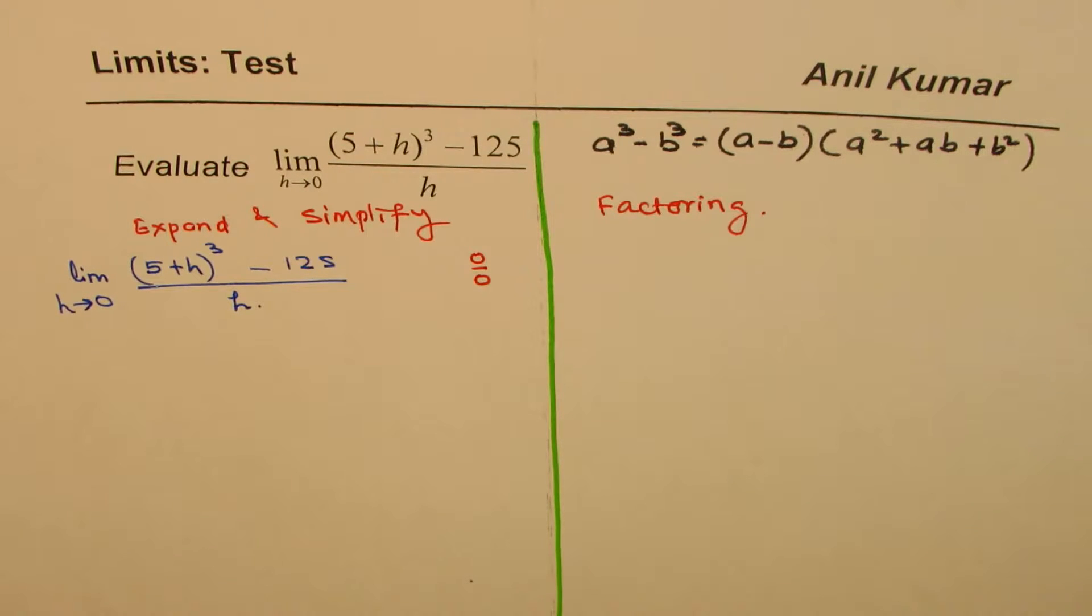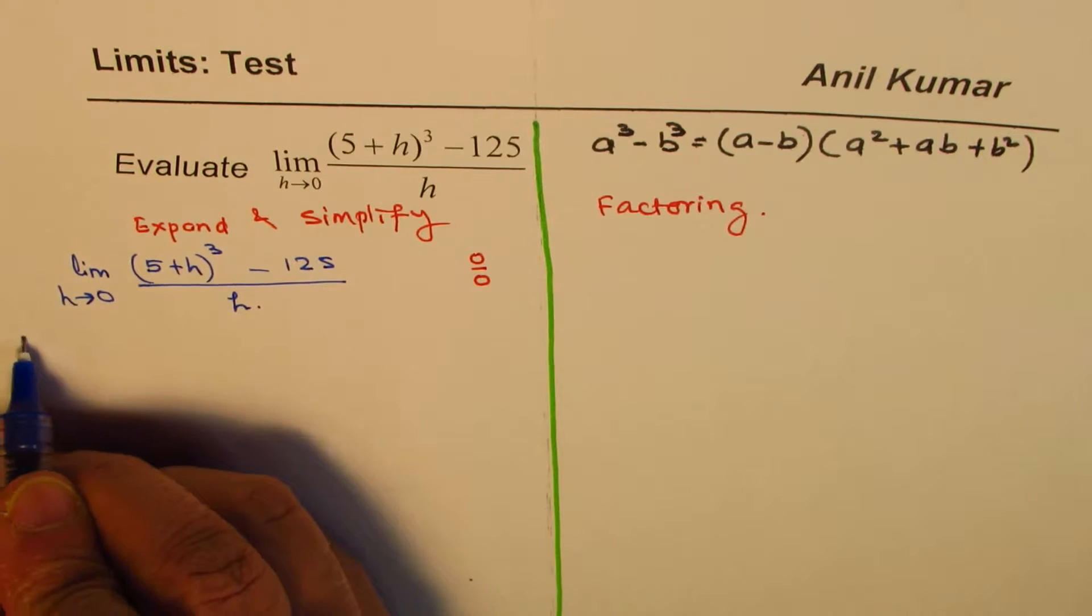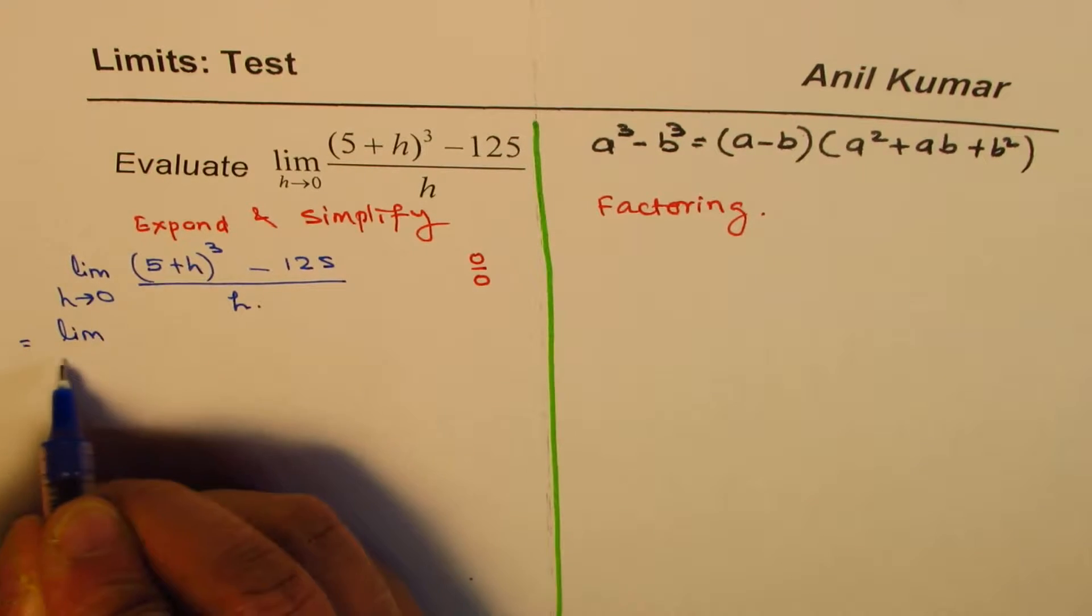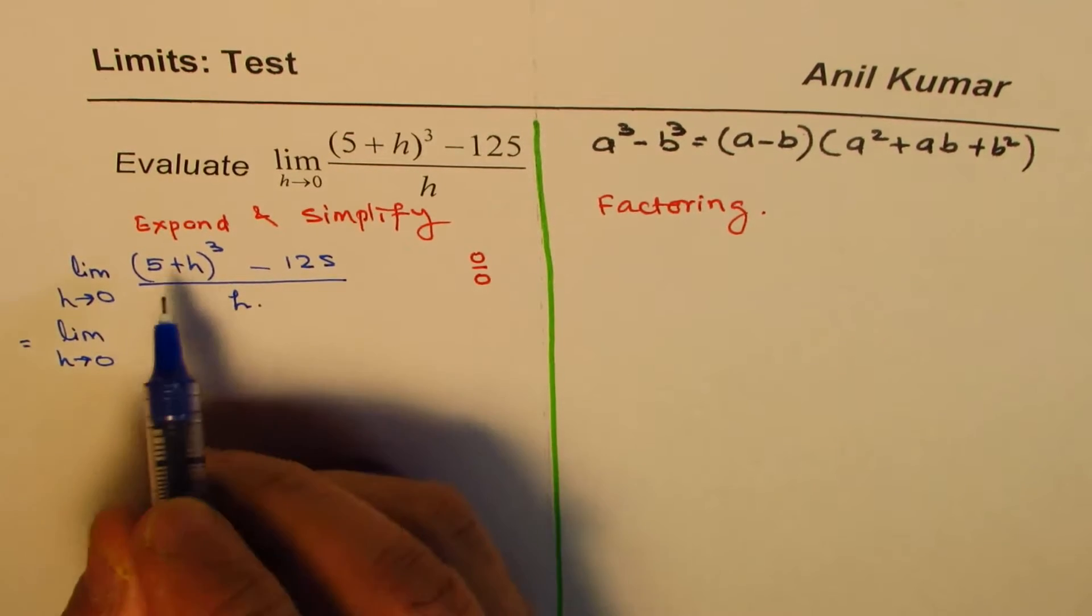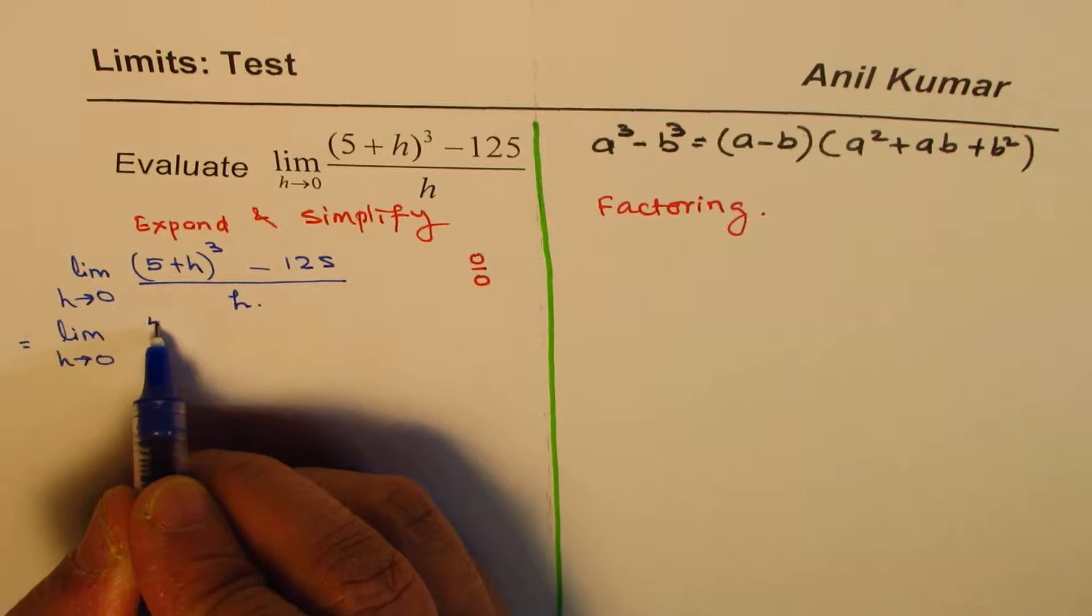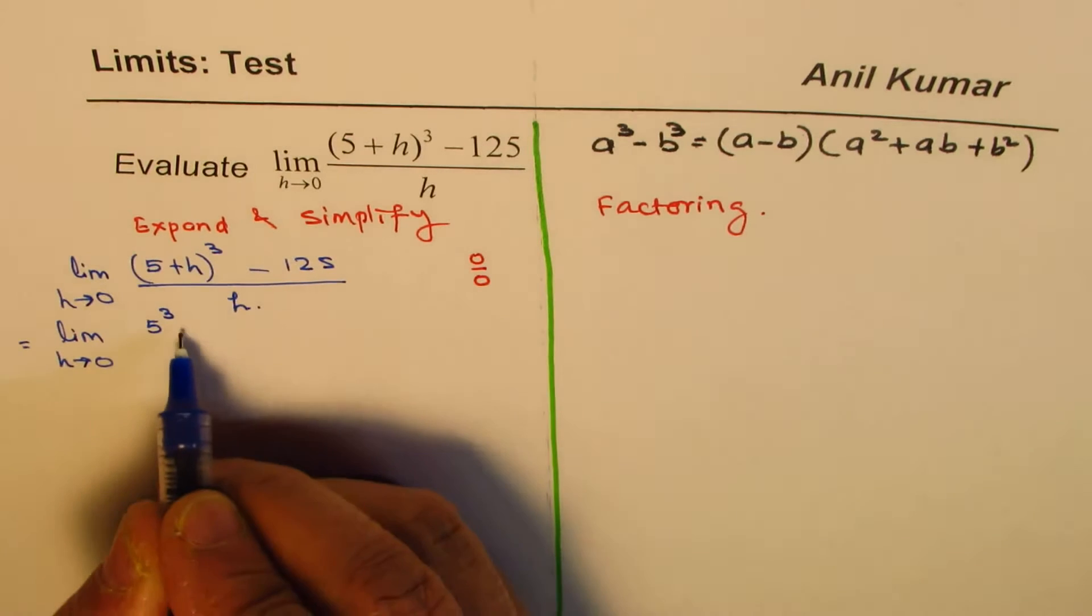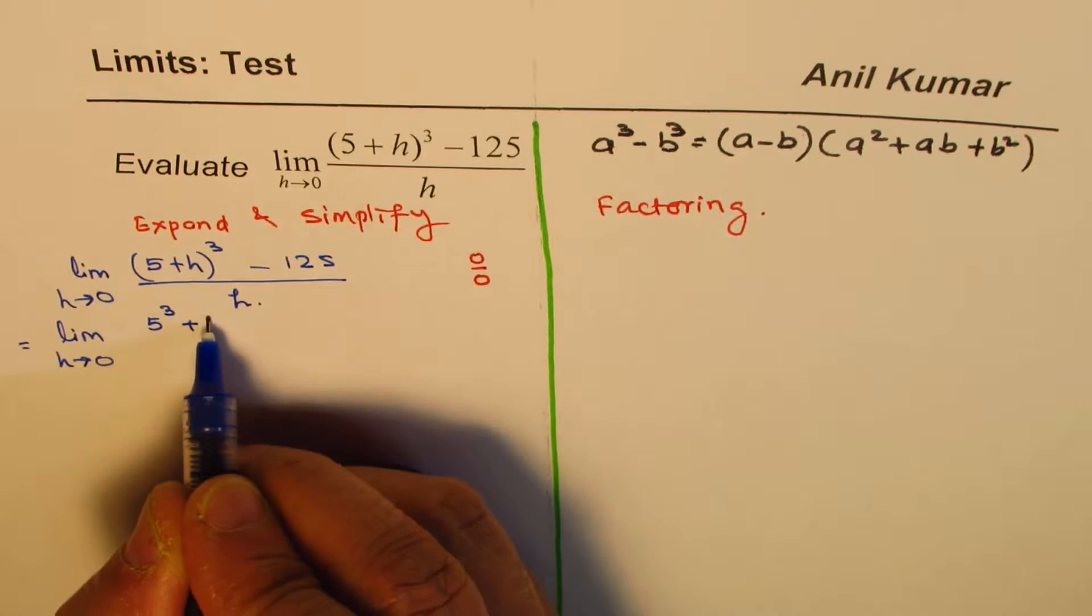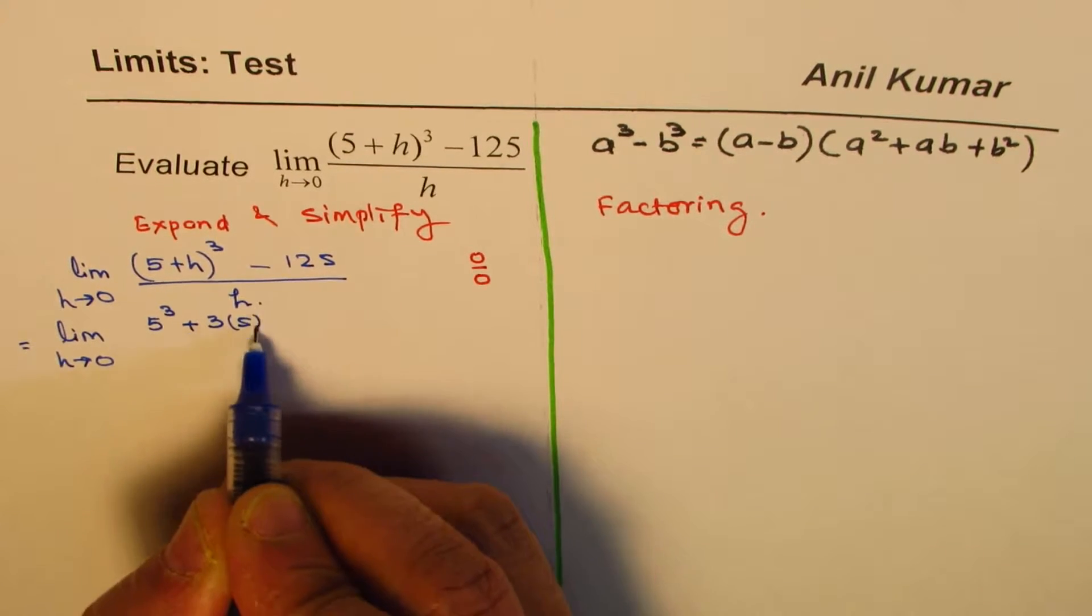Okay. But anyway, let's first expand and then simplify. So, we have limit h approaches 0. Now, what is a plus b whole cube? It is a cube, so I am just applying the formula a cube plus 3a square b,